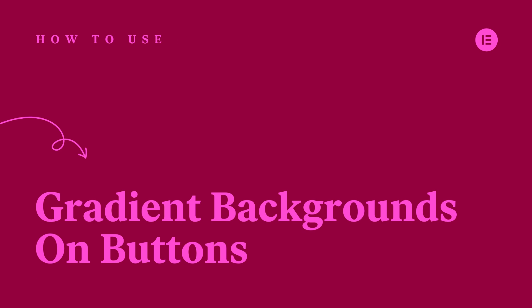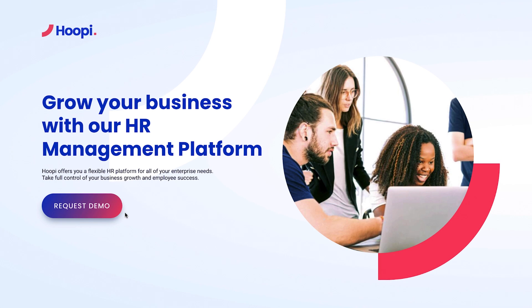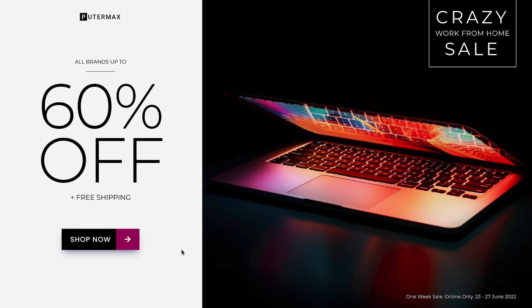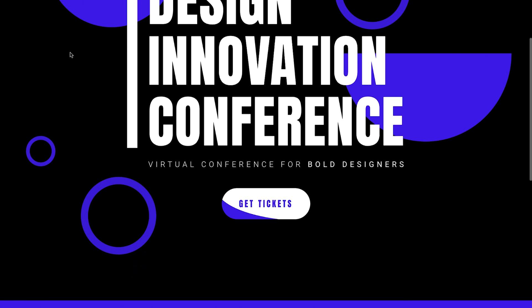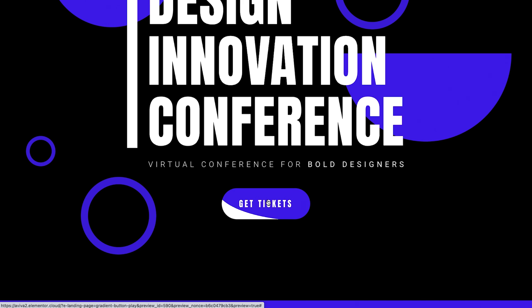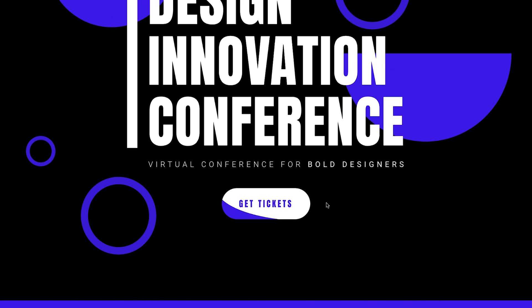Hey there, it's Aviva from Elementor. Today I'll show you how to create striking background gradients for your website buttons in Elementor without using any code. The button background gradient functionality provides a number of settings which you can customize to reflect the style of your website. It's located in the background section of the button widget, so if you're not yet familiar with this widget, I recommend you first watch our dedicated button widget tutorial.